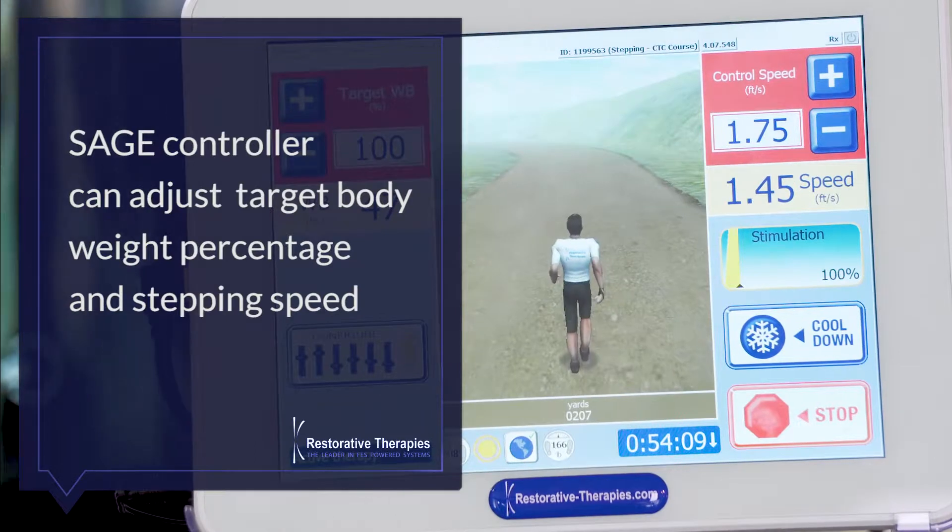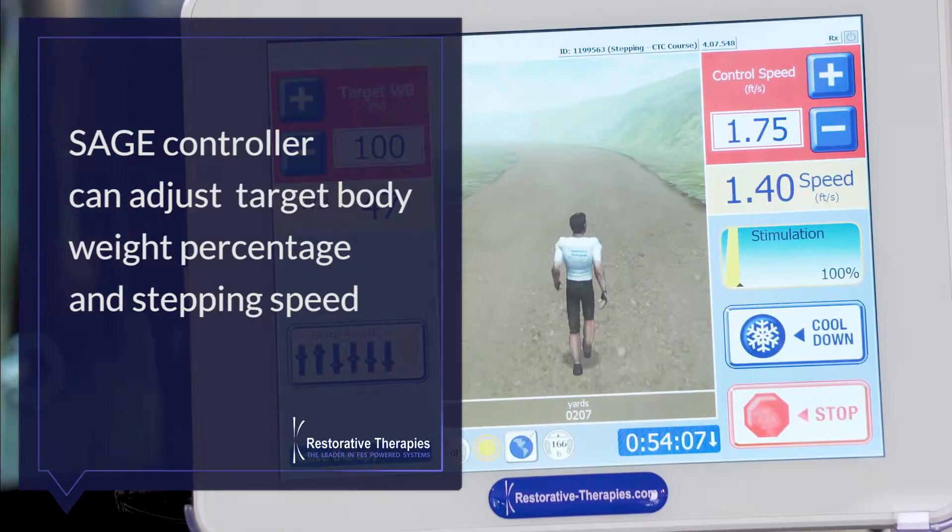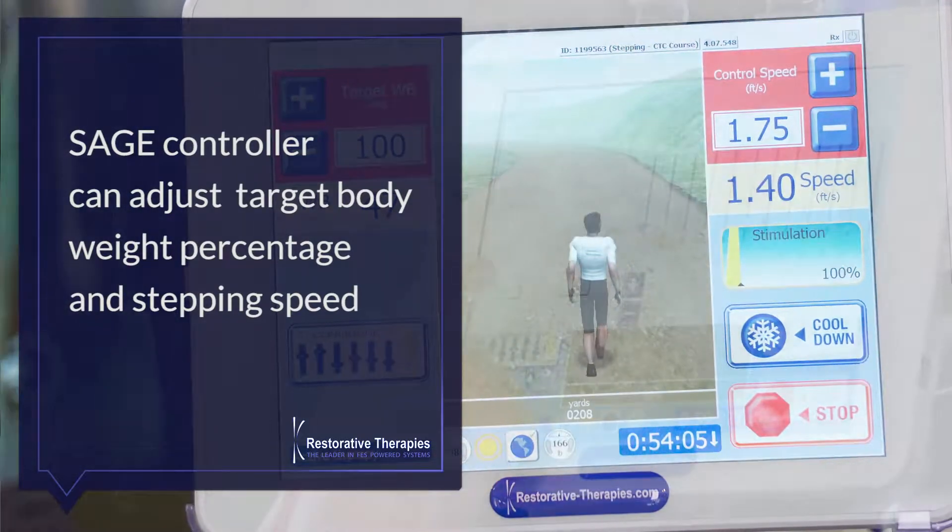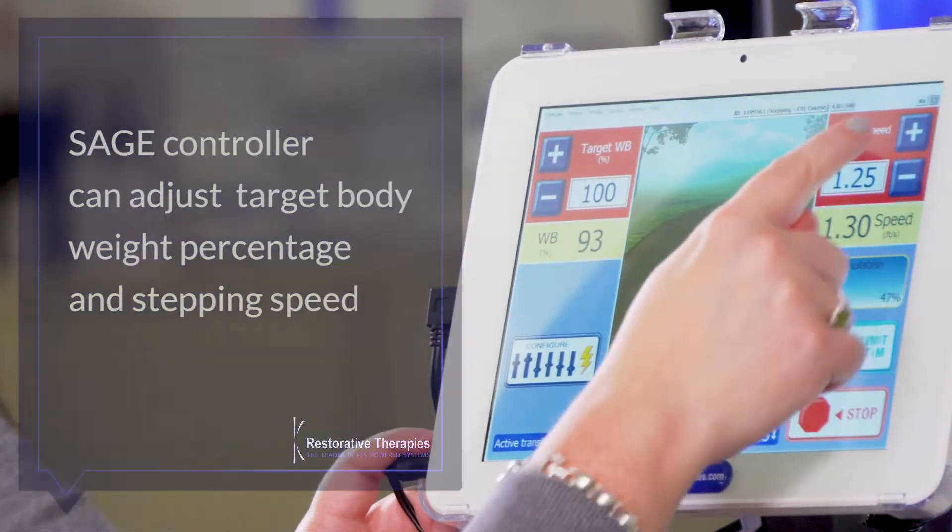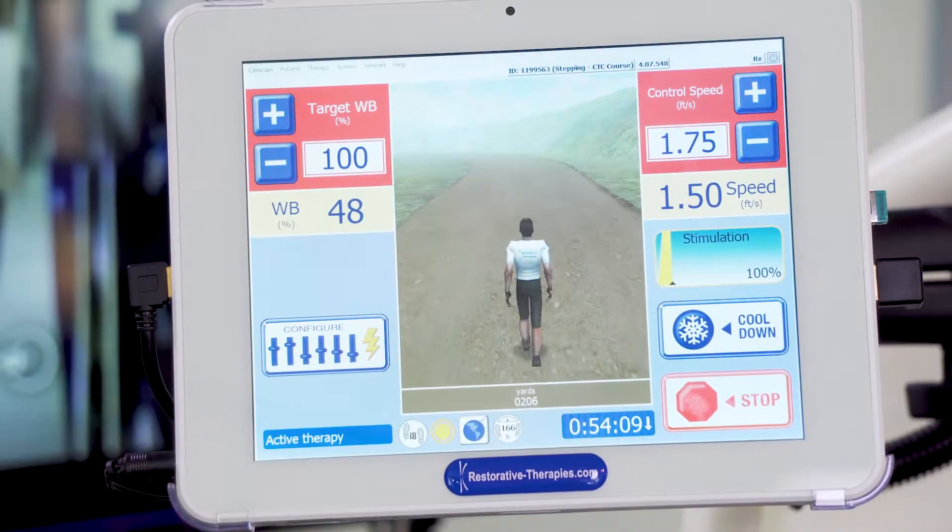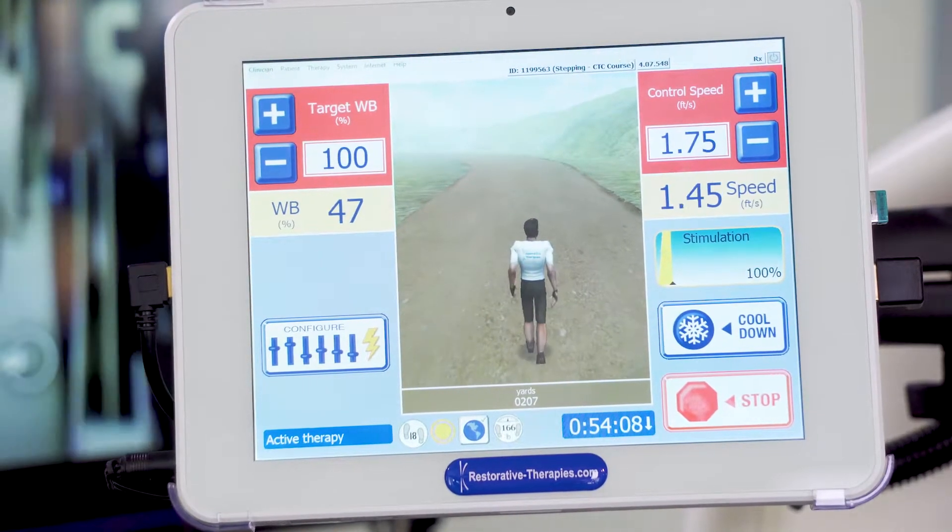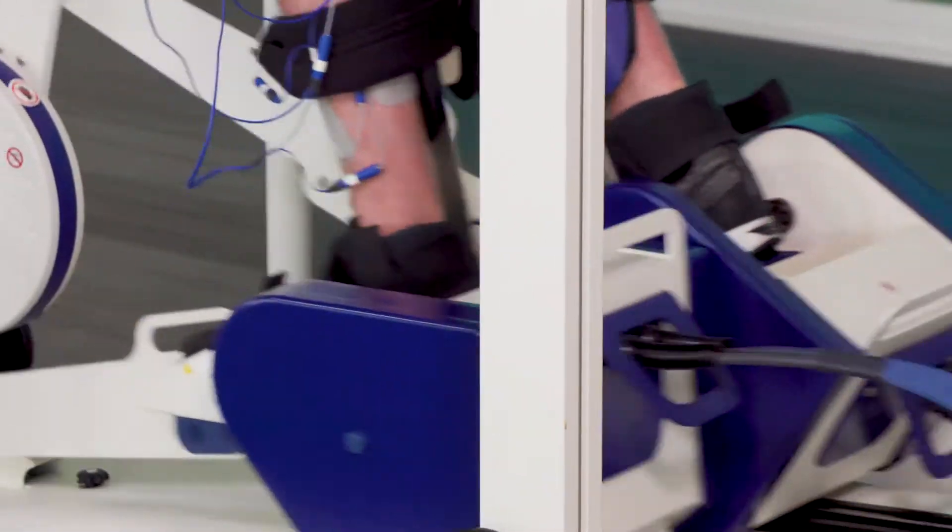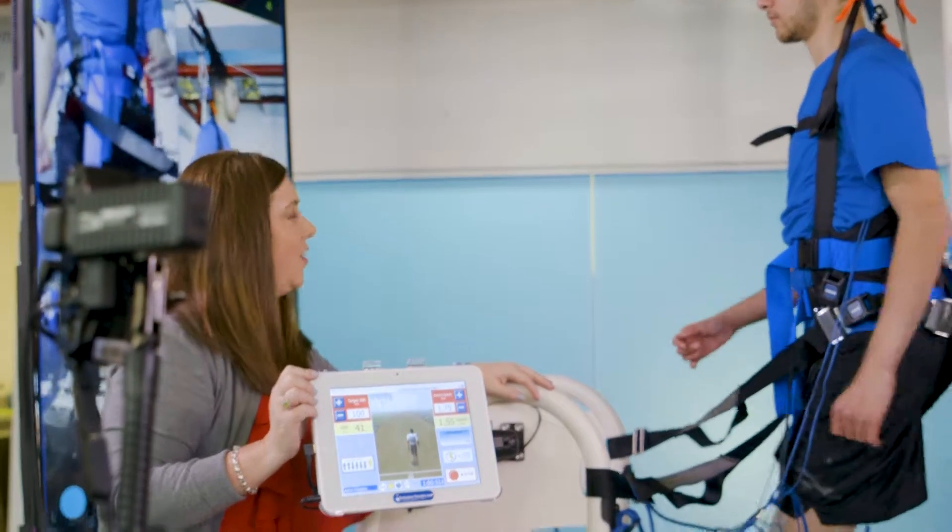Here on the RT600 Sage Controller, I can adjust Parker's target body weight percentage and his stepping speed. The RT600 Sage Controller automatically regulates the FES to help Parker's muscles bear a challenging yet appropriate percentage of his body weight while he steps.